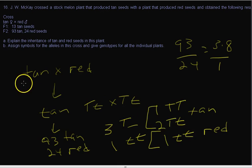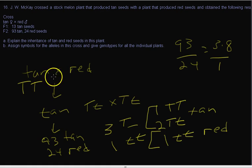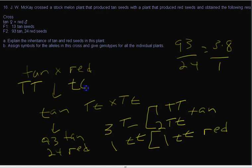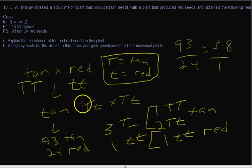If all that's true, then the P1 tan parent was homozygous dominant. We know tan is dominant because we crossed tan to red and all the F1 heterozygotes were tan. So we can define our symbols: big T equals tan and little t equals red. Once you know this, you can fill everything else in — that's the official answer to the problem.